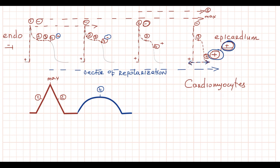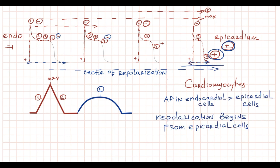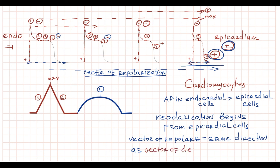So we see that between cardiomyocytes there is a substantial difference in the length of the action potential. The length of the action potential gradually decreases from endocardial to epicardial cells, and this shorter action potential of epicardial cells compared to the longer action potential of endocardial cells is the reason why repolarization begins from epicardial cells. That is why in cardiomyocytes the vector of repolarization is orientated in the same direction as the vector of depolarization.